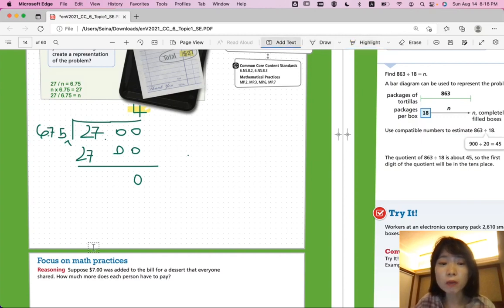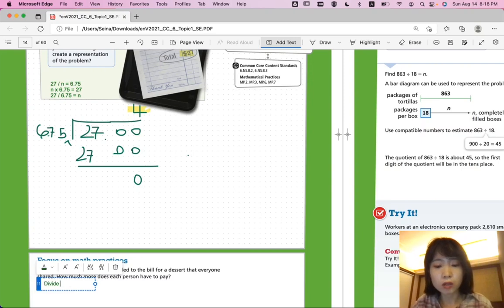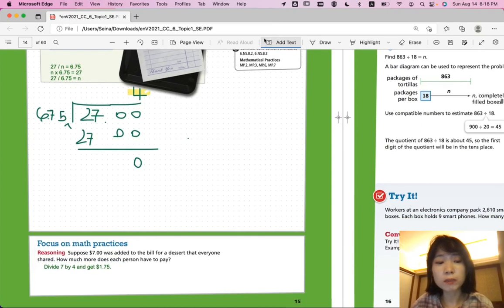So, we're going to divide 7 by 4 and get $1.75. So, each person would pay $1.75. Okay. How do you divide whole number by whole number? So, 7 divided by 4,